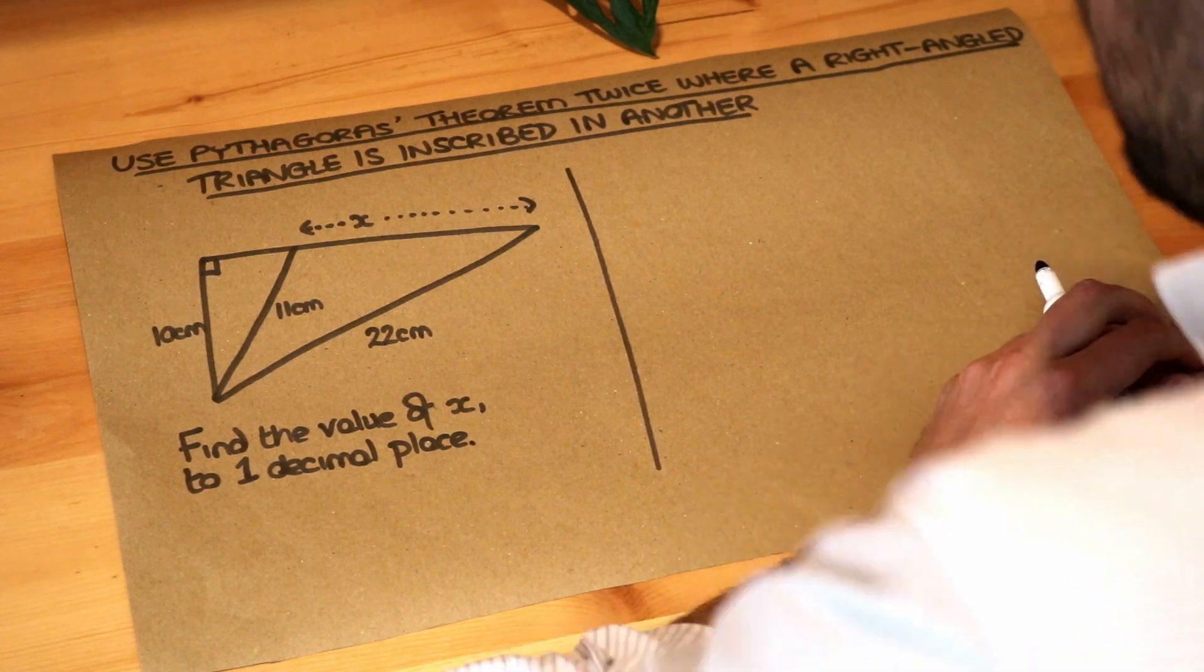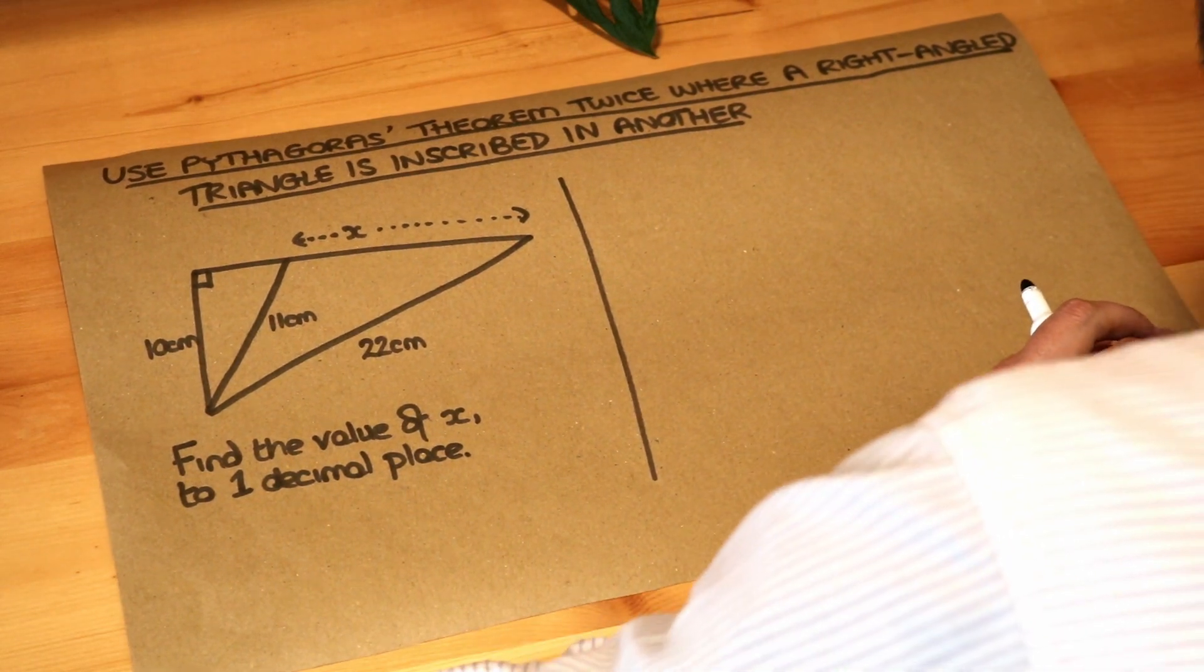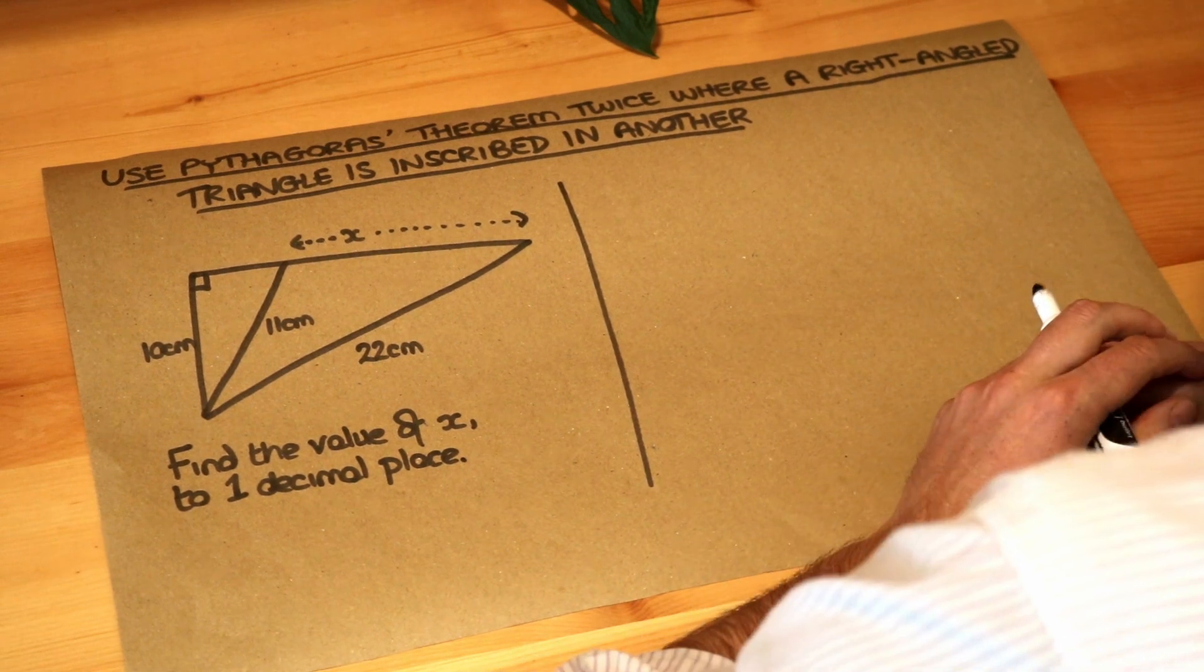Hello and welcome to this Dr. Frost video on using Pythagoras theorem twice where a right-angled triangle is inscribed in another.